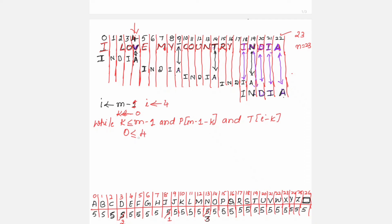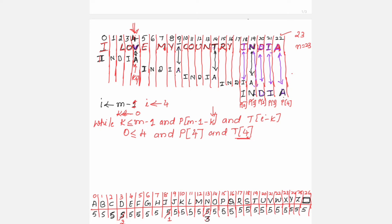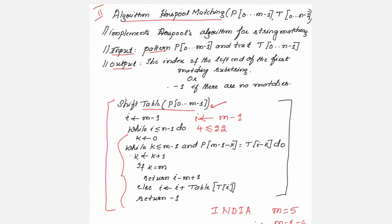With k equal to 0: is 0 less than or equal to 4? Yes. We check p[m-1-k] = p[4] against t[i-k] = t[4]. p[4] is the last letter of 'India', which is 'a', and t[4] is 'v'. Since 'v' does not match 'a', we exit the inner while loop.